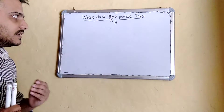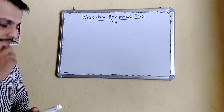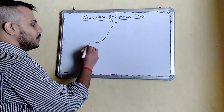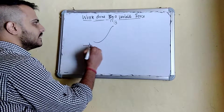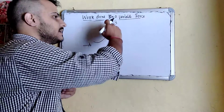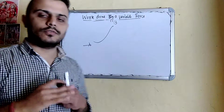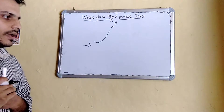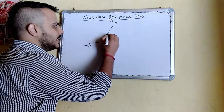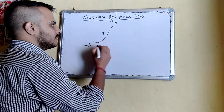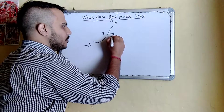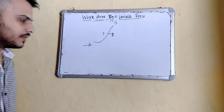Today we are going to derive the variable force expression. First, let us consider a body moving from point A to point B. From A to B, the force is changing — it is a variable force. Let us consider a point P on the path, and at point P the force applied on the body is capital F.